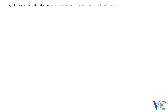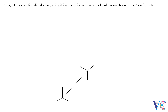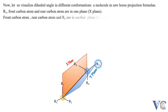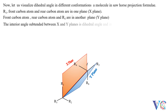Now let us visualize the dihedral angle in different conformations of a molecule in sawhorse projection formulae. R1, front carbon atom, and rear carbon atom are in one plane, the X-plane. Front carbon atom, rear carbon atom, and R5 are in another plane, the Y-plane. The interior angle subtended between the X and Y planes is the dihedral angle, and in this example it is 60 degrees.